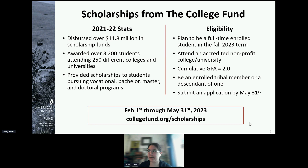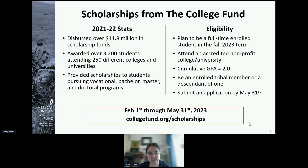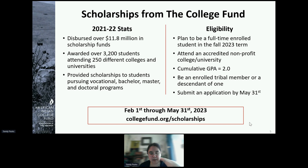Some stats from our scholarship team: in 2021–2022, we dispersed over $11.8 million in scholarship funds to over 3,200 students attending 250 different colleges and universities. That included scholarships pursuing vocational, bachelor's, master's, and doctoral programs. Eligibility requirements are that students need to be enrolled full-time, attend an accredited nonprofit college or university, have a cumulative GPA of 2.0, and be an enrolled tribal member or a descendant of one. Our priority deadline each year is May 31st; however, we do take applications on a rolling basis.